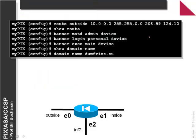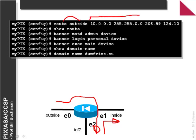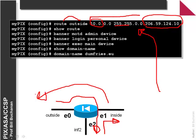PIX routes are an important element as they define the default gateway and allow connections between the outside and the DMZ and from the DMZ back into the inside. These two routes do not exist by default. In this case, 'route outside 10.0.0' matching this part should be sent to that address. Any default traffic gets sent off to address 206.59.124.10 — this will be a default route. We can also set banners and the domain name.